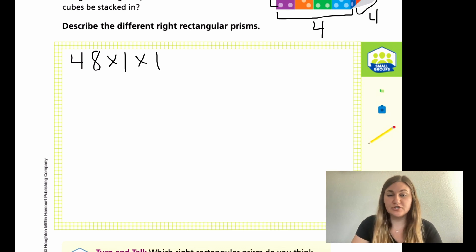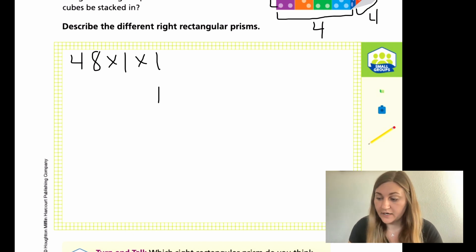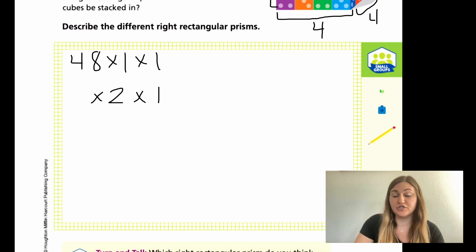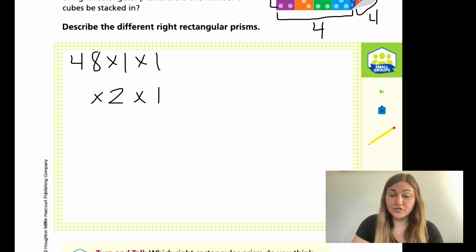Then I know if I choose to just change one of the widths or lengths, it'll also change the height. For example, if I left this length 1 and I just changed the width to 2, that means that my 48 has to change so that the 3 numbers being multiplied is still equal to 48. So if I'm changing one of them to 2, that means I need to take half of 48, and half of 48 is 24.